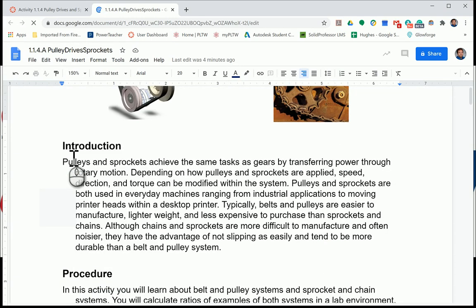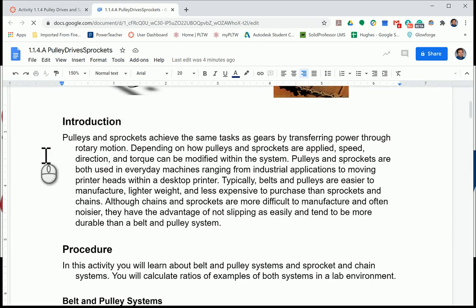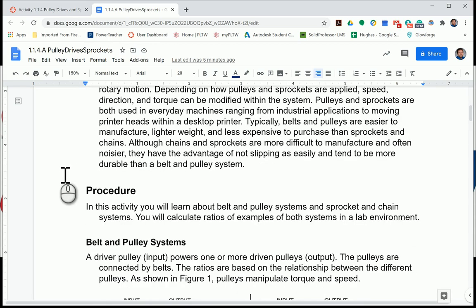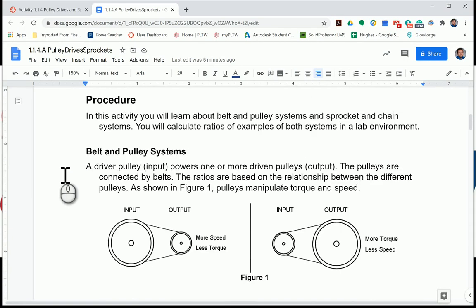Pulley Drives and Sprockets achieve the same tasks as gears by transferring power through rotary motion. Depending on how pulleys and sprockets are applied, their speed, direction, and torque can be modified within the system. Pulleys and sprockets are used in everyday machines like printer heads. Belts and pulleys are easier to manufacture, lighter weight, and less expensive to purchase than sprockets and chains. Chains and sprockets are more difficult to manufacture and often noisier, but they have the advantage of not slipping as easily and tend to be more durable. We're going to learn about both systems and calculate ratios of examples in a lab environment.